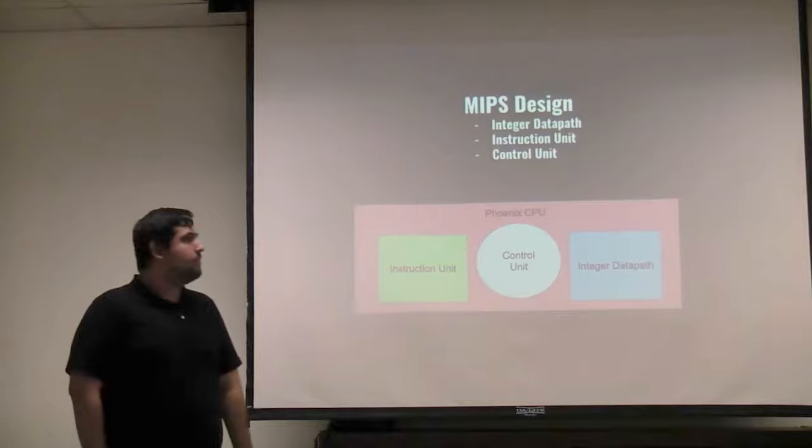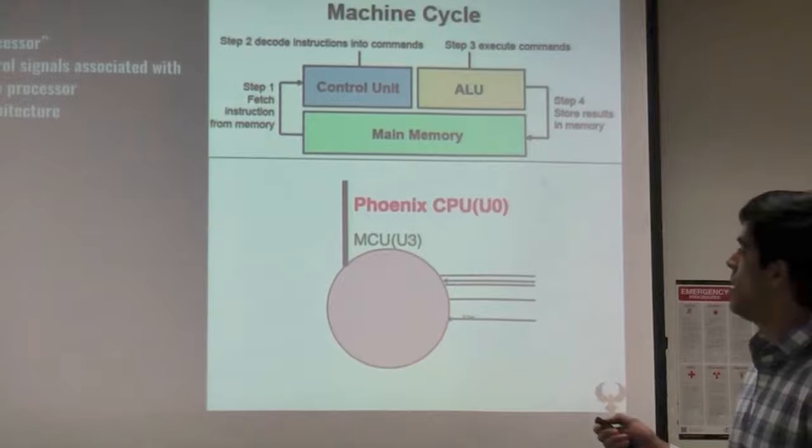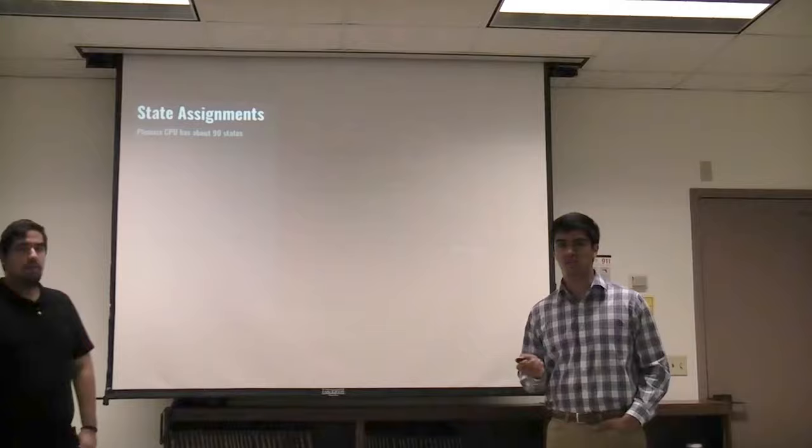Next we're going to be talking about the control unit in the Phoenix CPU. The control unit is the brains of the processor — it generates all the control signals associated with the processor. It's a state machine architecture. In the next slide, it's hard to see, but we have about 90 states in the control unit.